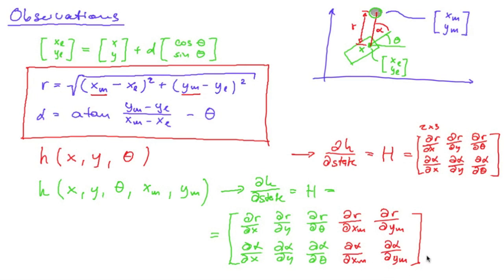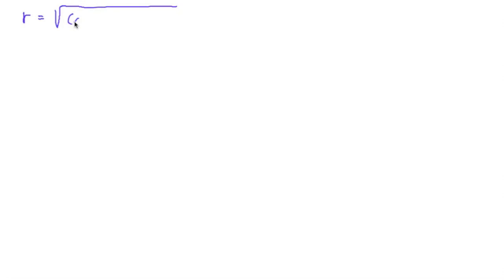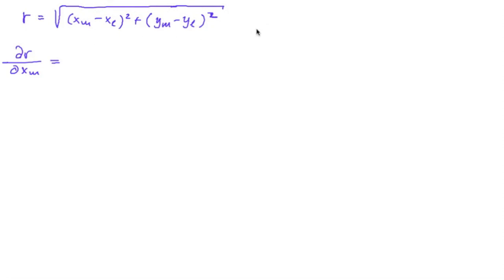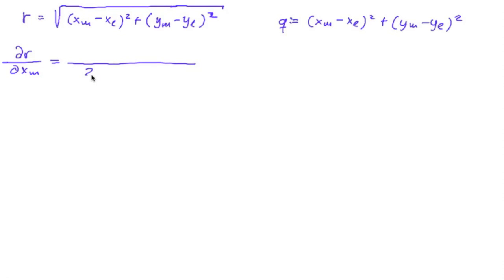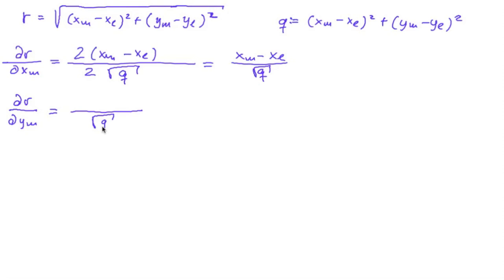Now we need to compute these new partial derivatives. First, let's look at r — the square root of the squared differences in x and y. Let's compute the partial derivative with respect to xm. If we denote the term under the square root as q, where q = (xm minus xl) squared plus (ym minus yl) squared, then the derivative is 1 divided by 2 times the square root of q, times 2(xm minus xl), which simplifies to (xm minus xl) divided by the square root of q. By symmetry, the derivative with respect to ym is (ym minus yl) divided by the square root of q.